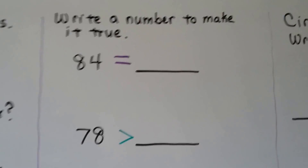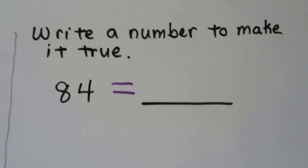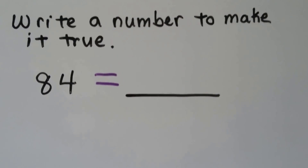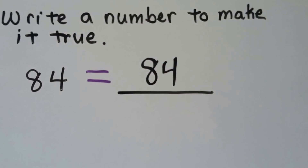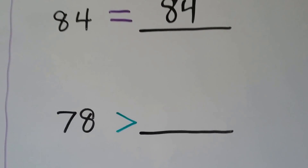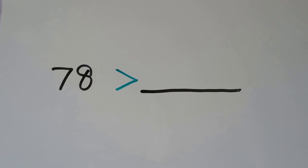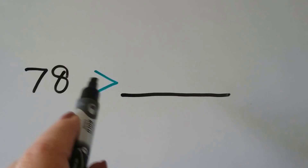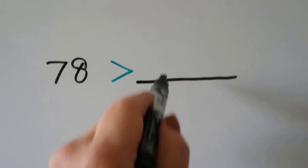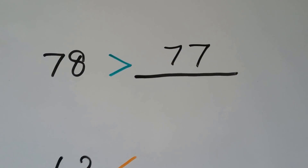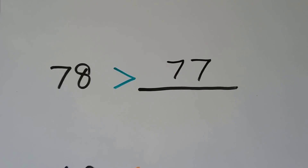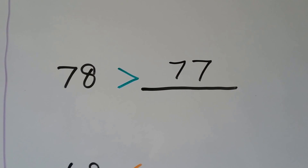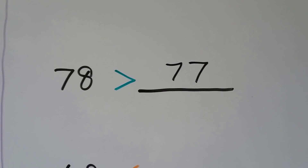Write a number to make it true. 84 is equal to — we can write any same number. 78 is greater than — we need to think of a number that 78 is bigger than. 78 is bigger than 77, and 76, and 75, and 74. We could choose any number that would be less than 78.